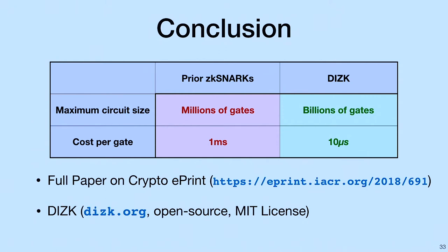The full paper is available on ePrint. I'm proud to say that we've released DIZK as an open source library on GitHub. You can find it by going to DIZK.org. We've had to put a lot of work into making this library available to the public with a convenient profiling infrastructure. This is so that you can replicate our results, and as well as build new and interesting applications for DIZK.